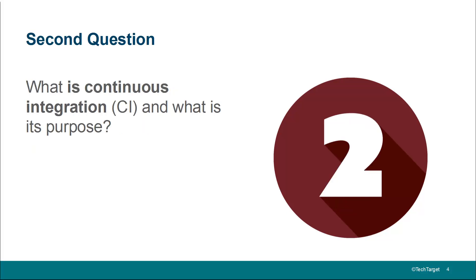For question number two: what is continuous integration? Continuous integration is the art of making sure that the code you check into a shared source code repository compiles. Continuous integration servers are constantly looking for check-ins, looking for commits. If they find commits, they will try and build the application, make sure that it compiles. And if it doesn't compile, the build fails. That's typically what we talk about with continuous integration — making sure that the dev team can continuously integrate.